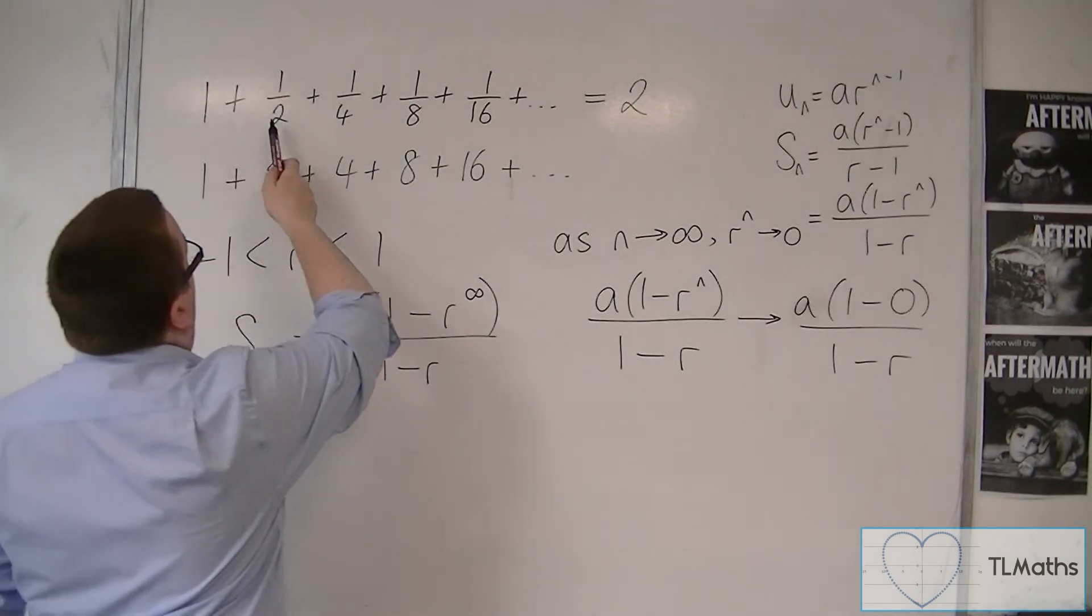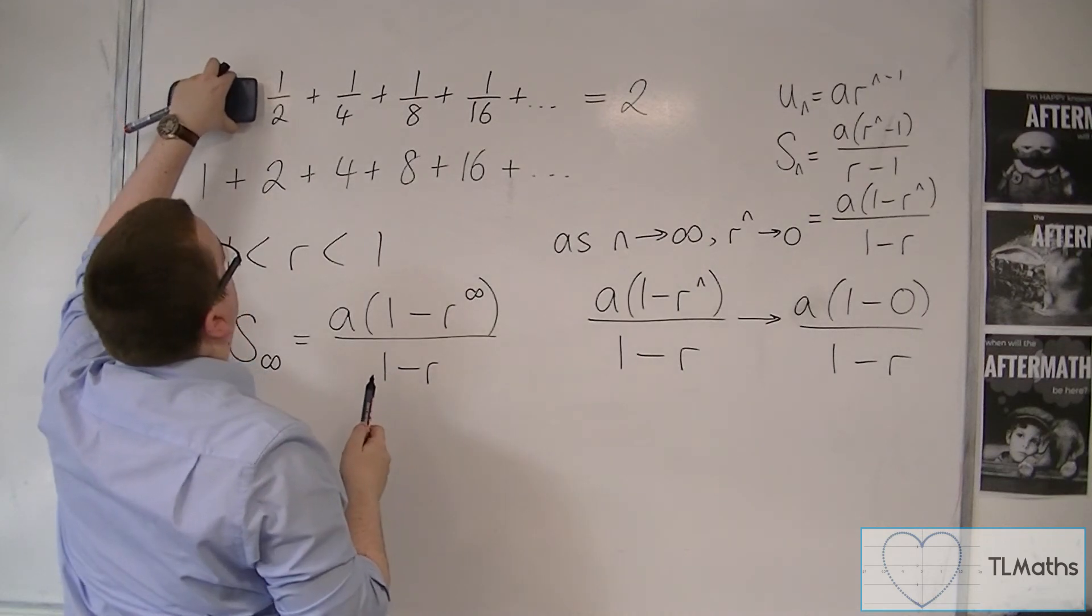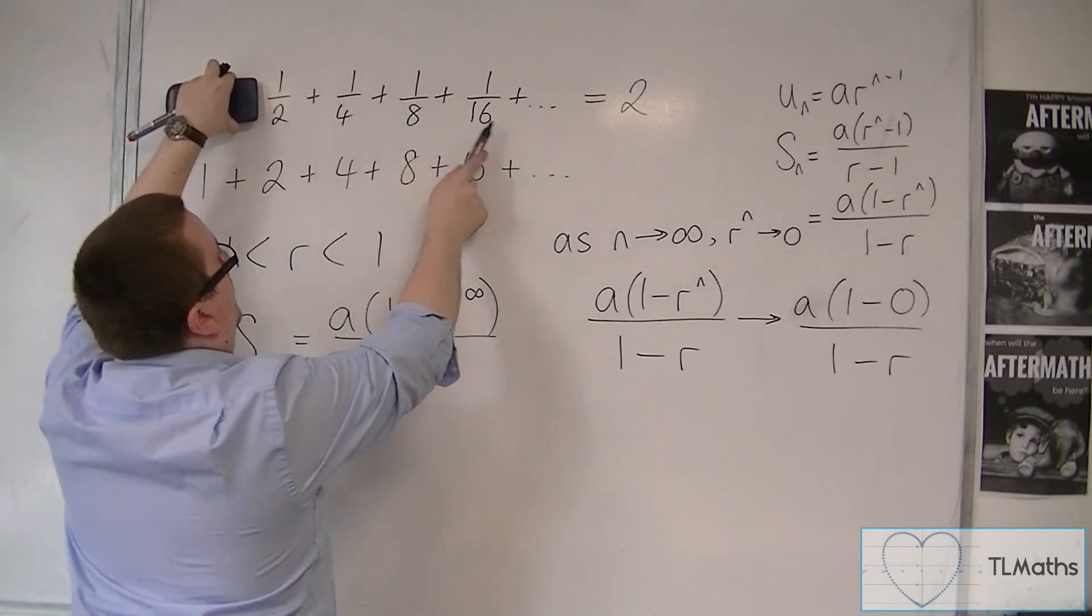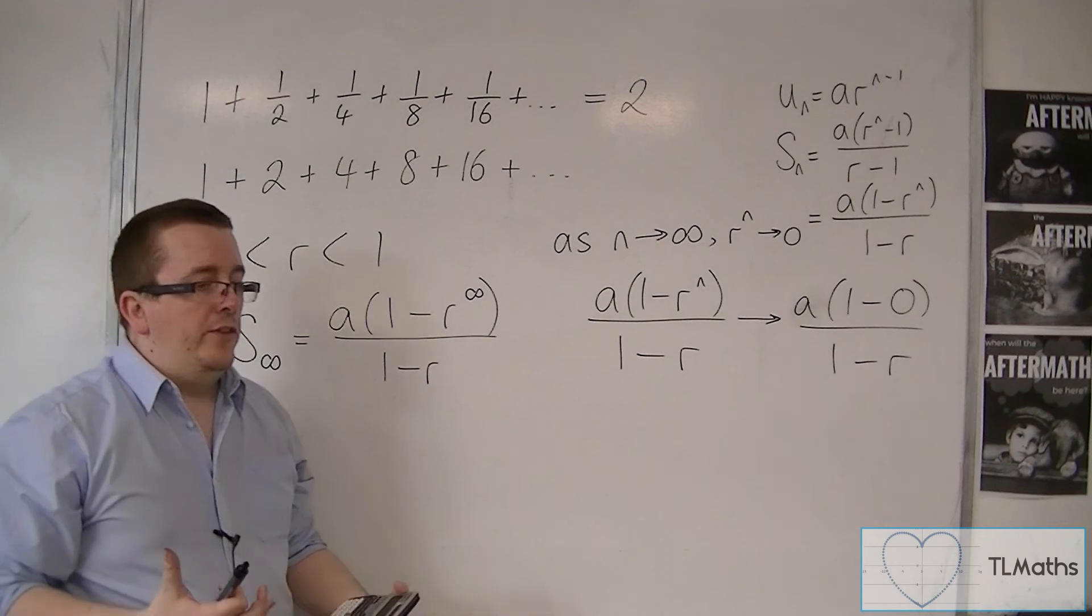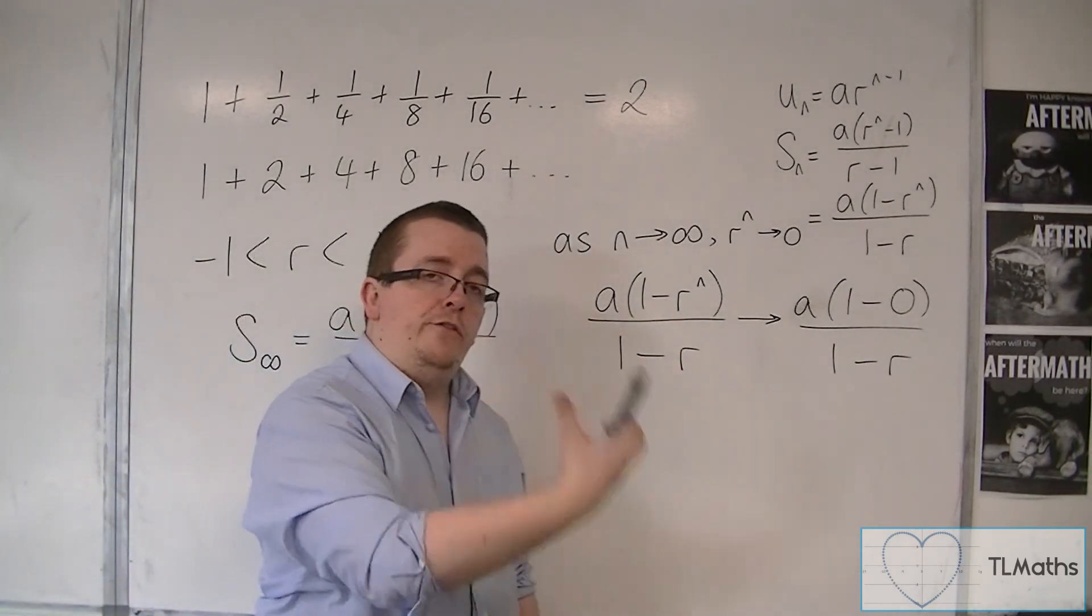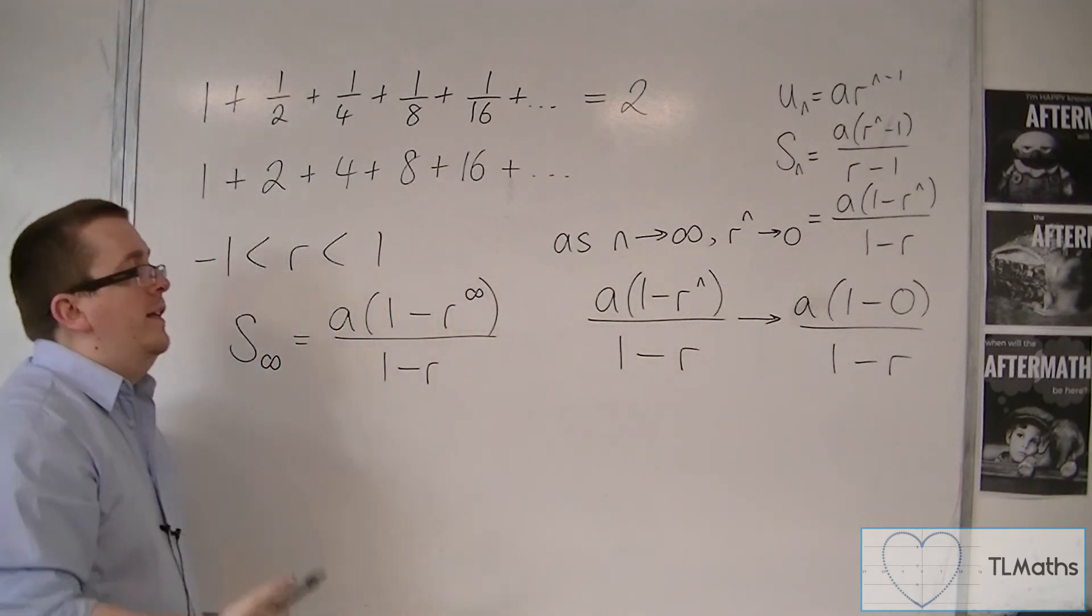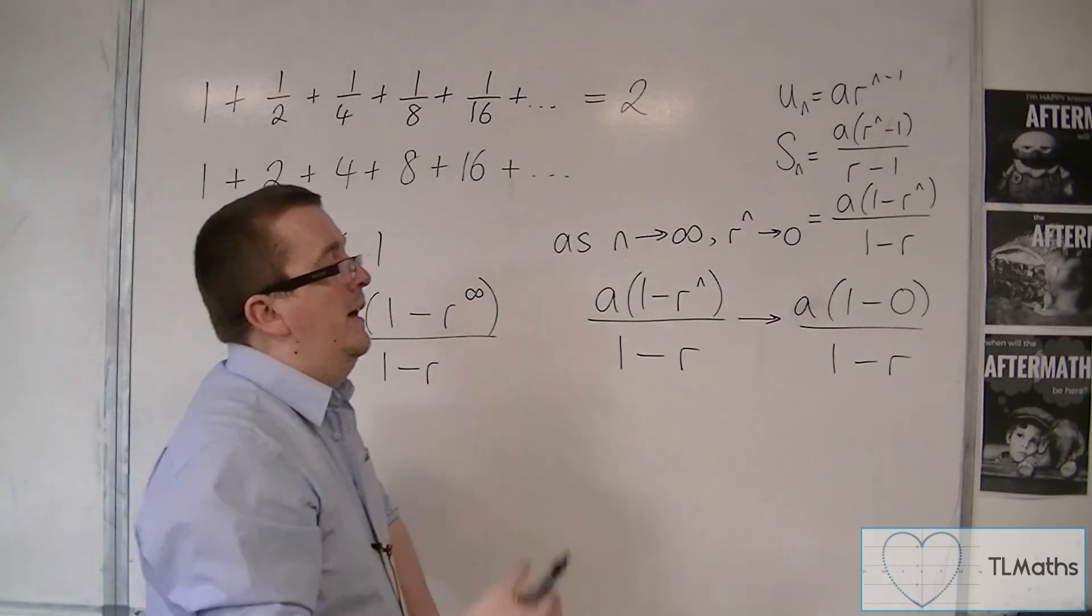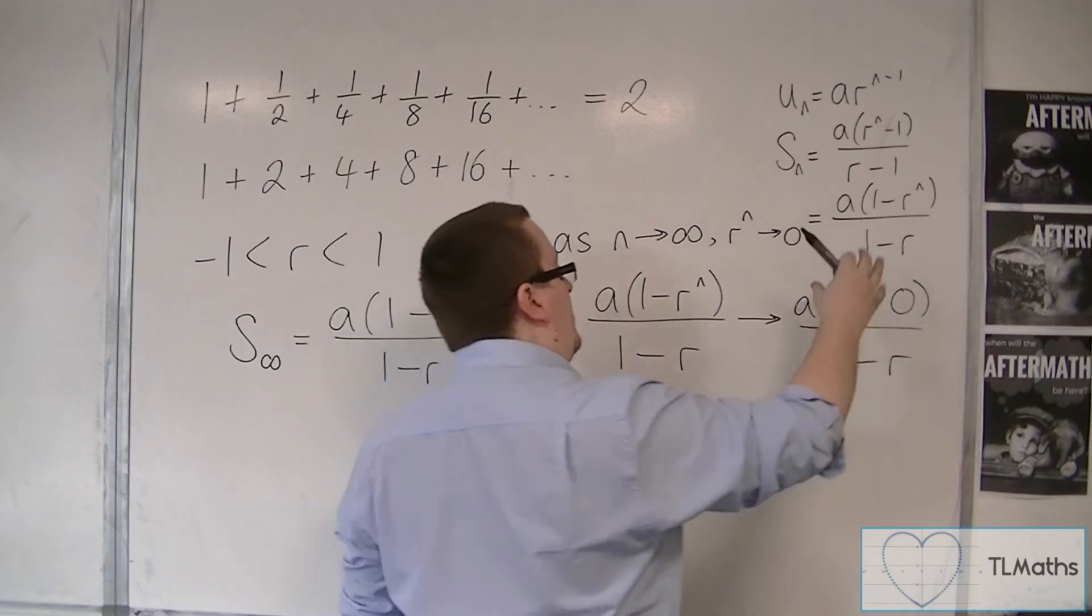As you can see, I mean, what I've got here is if you started at a half and you were timesing by a half each time, then the r that you get gets smaller and smaller and smaller. So it's like a half squared, a half cubed, a half to the 4, a half to the 8, a half to the 50, half to the 100. These fractions that I get are getting smaller and smaller and smaller until they are effectively negligible, until they are effectively 0.